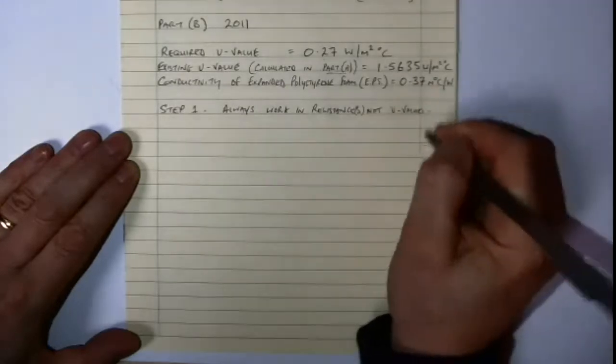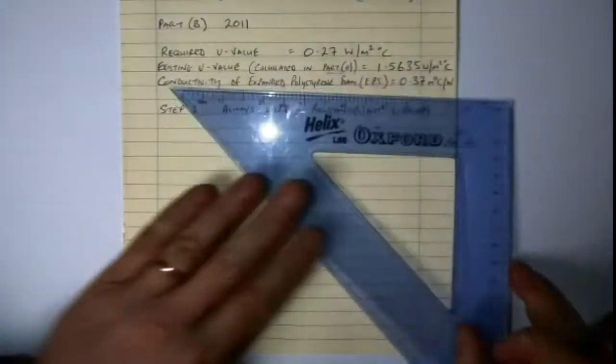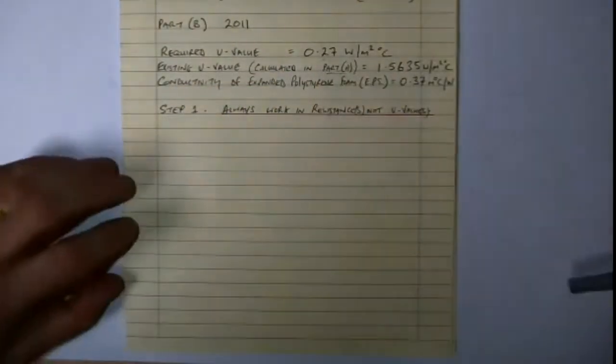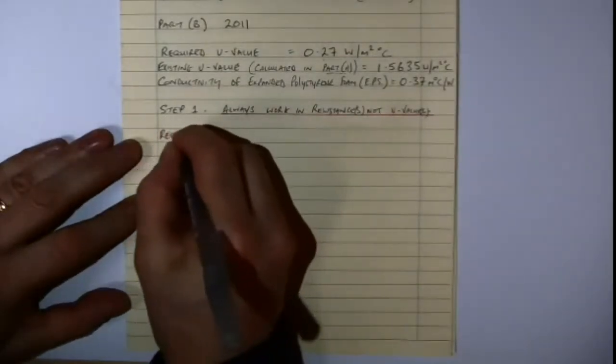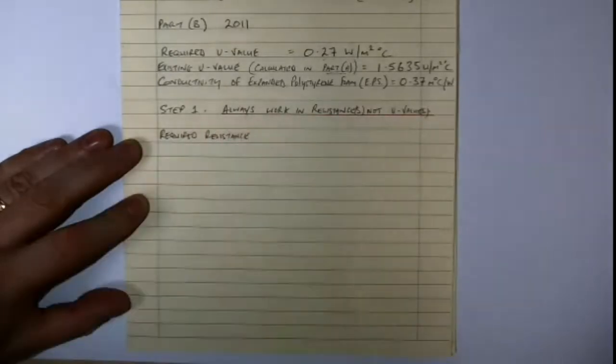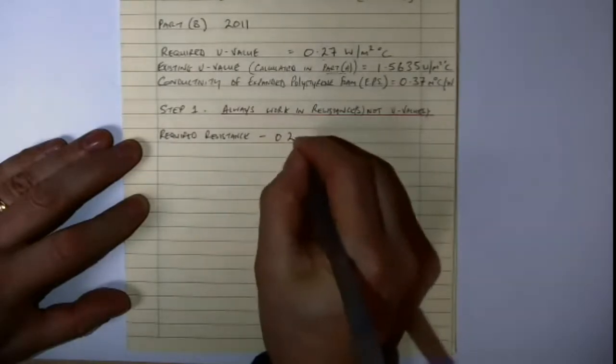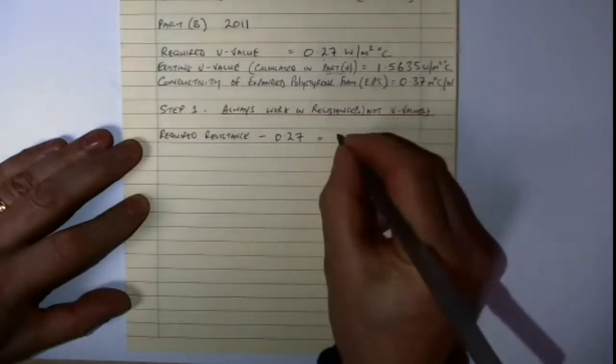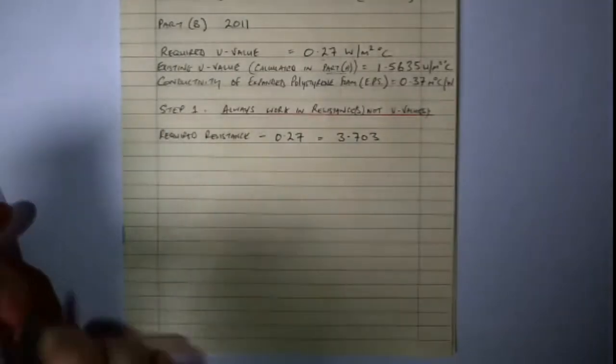So we have the two U-values. So what we can do is we can convert. We know what we want to get. We want to convert our U-value, the one that we're given to achieve. We want to convert that into a resistance. And the required U-value that is given us in the question is 0.27. And to convert that to a resistance, all we do is divide 1 by 0.27. I'm just going to demonstrate it here.